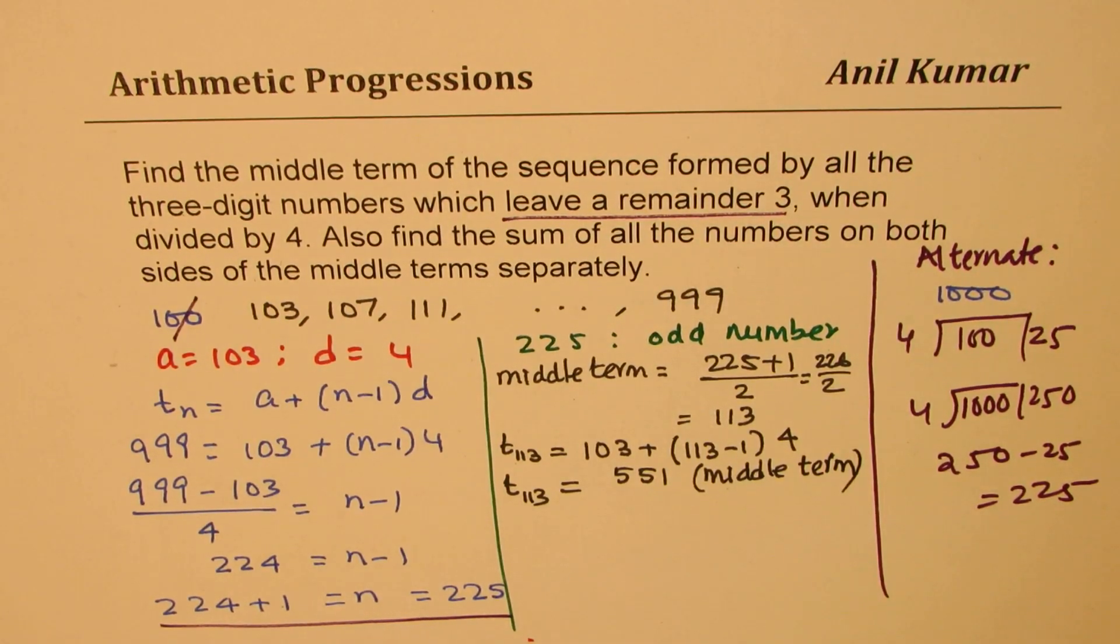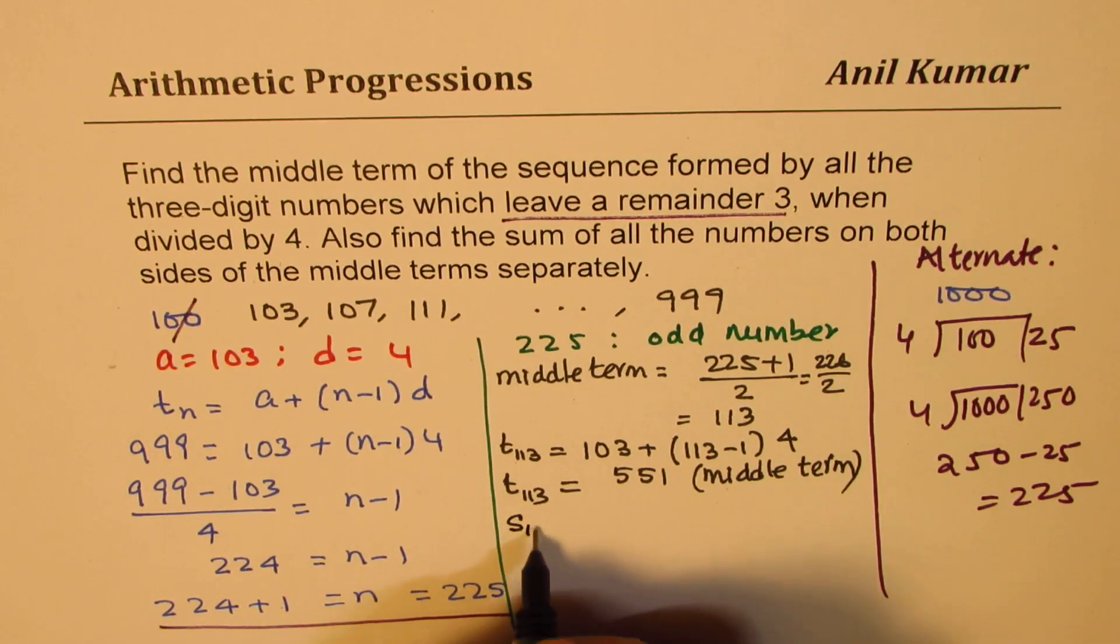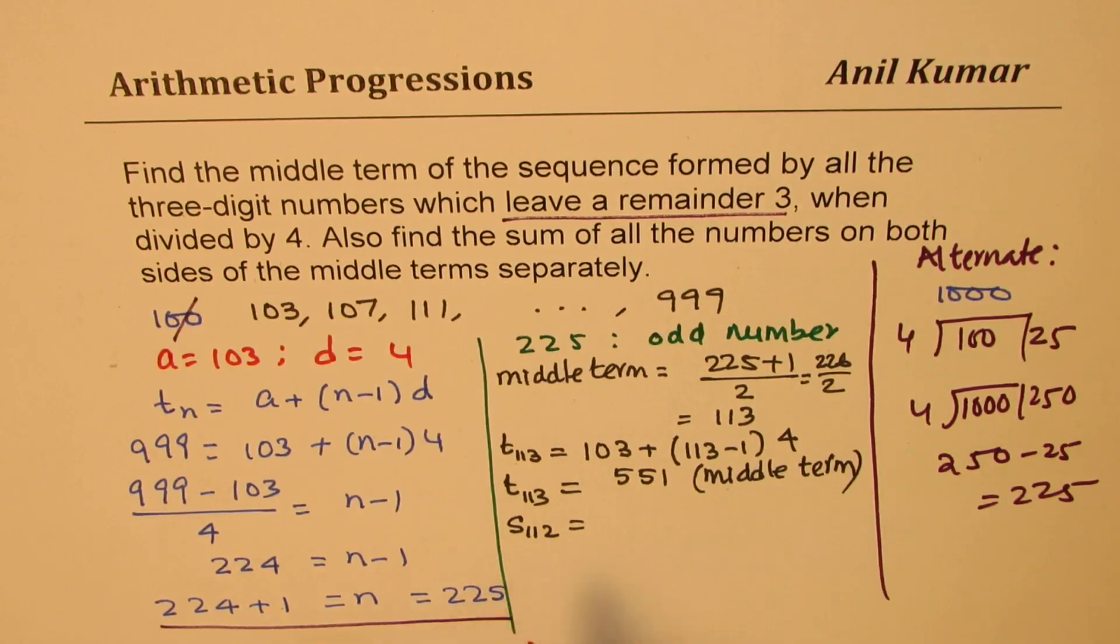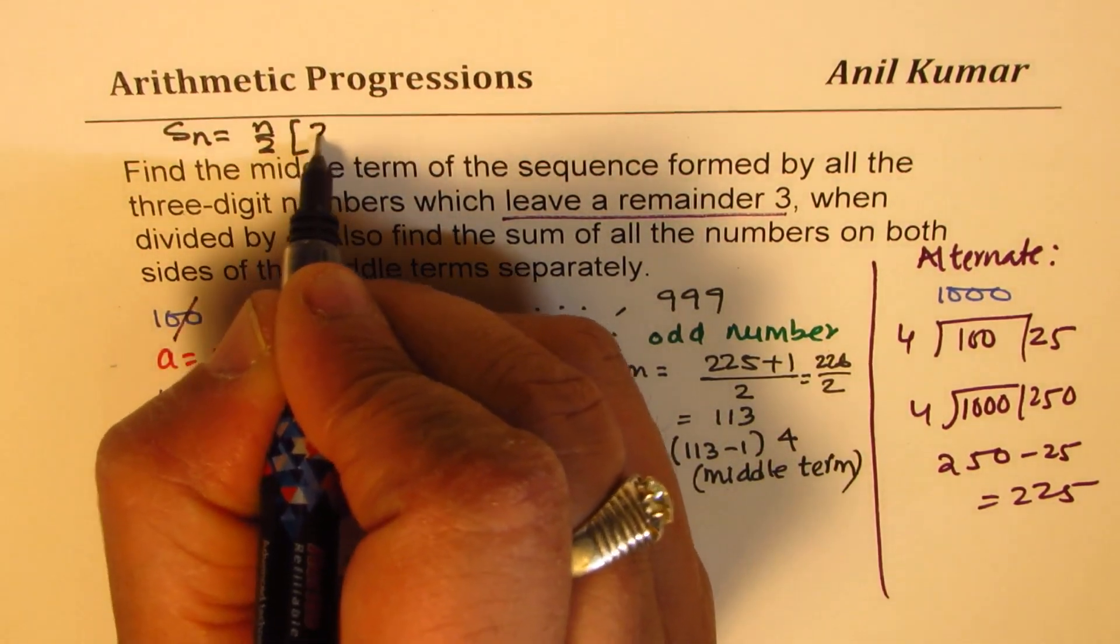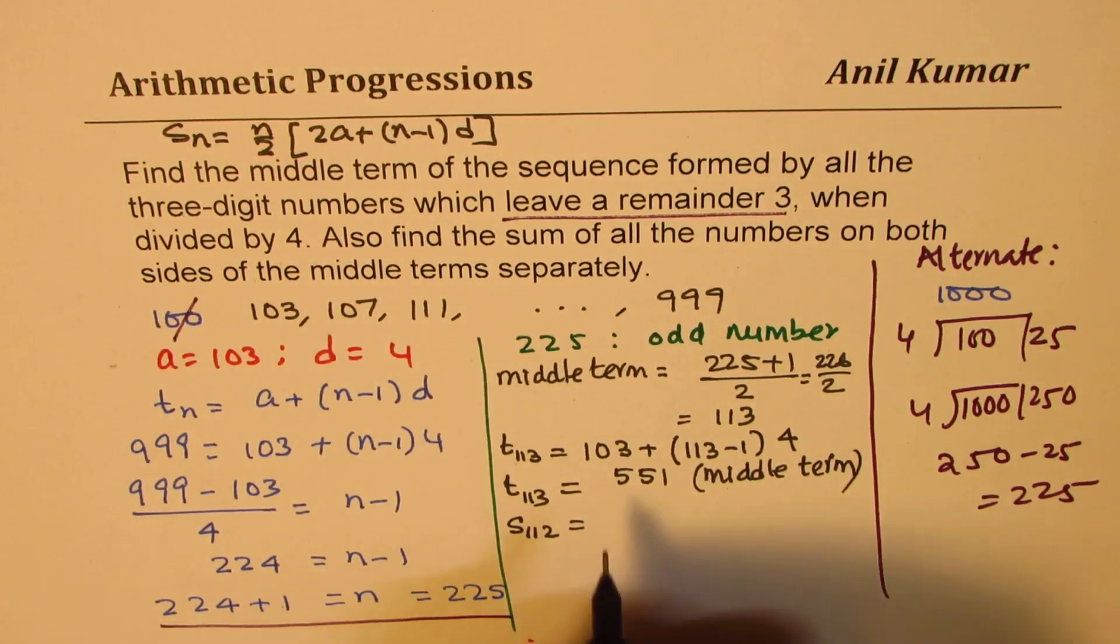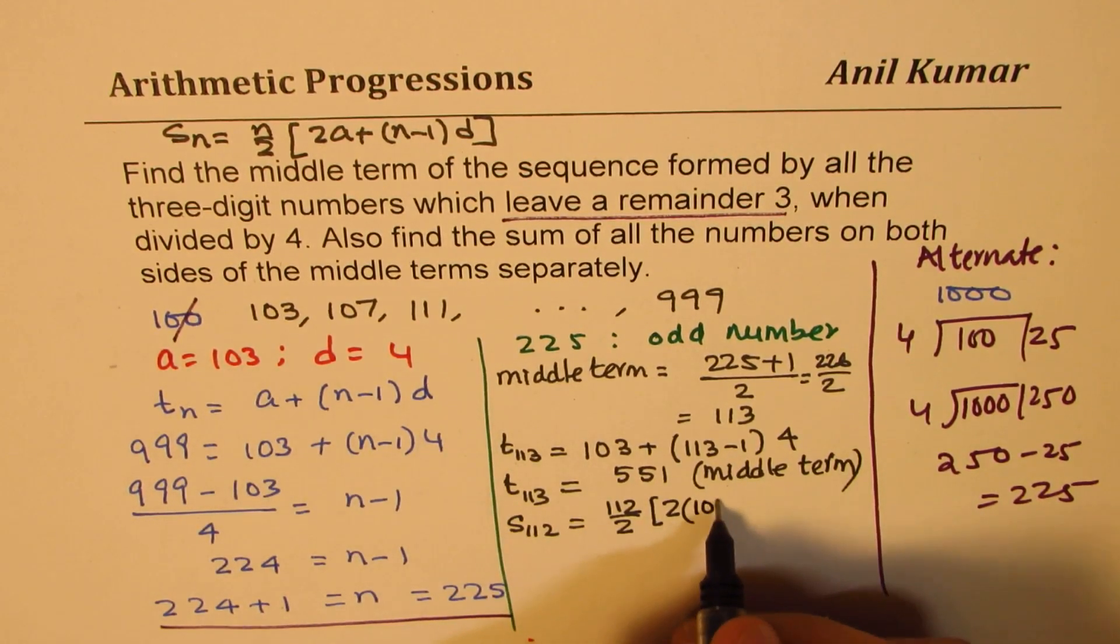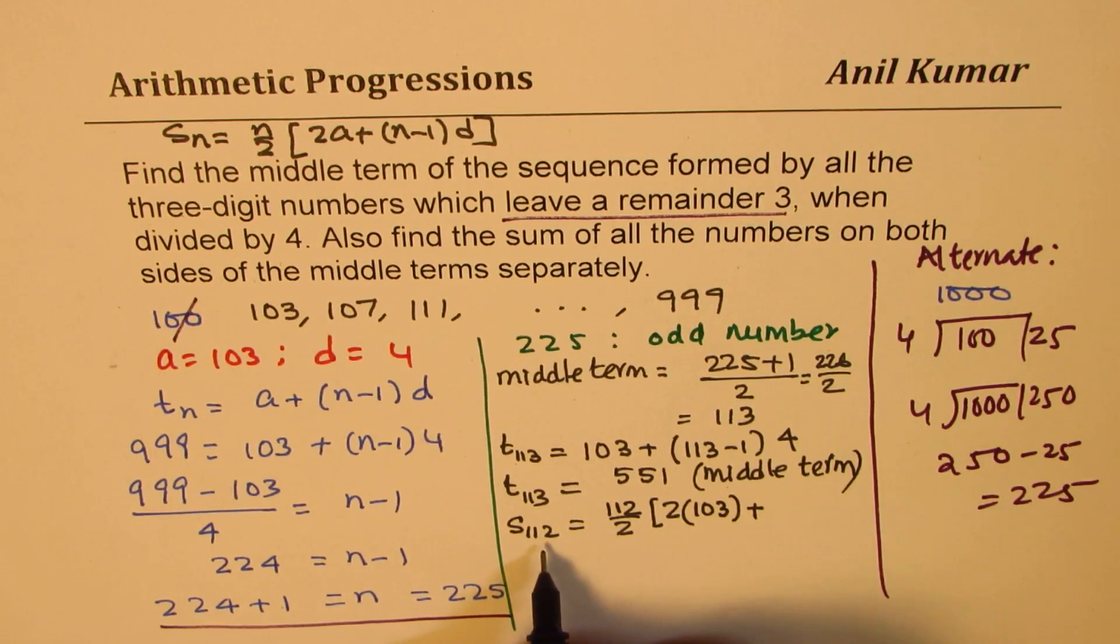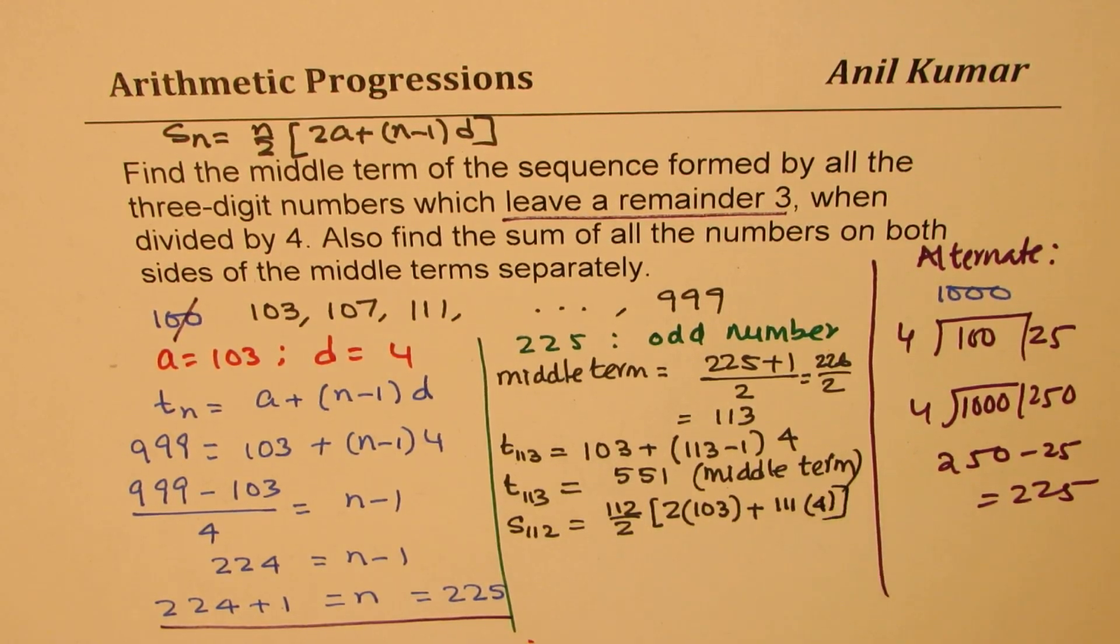Now, how do you find the sum of terms? That means we have to find sum of all the terms before it and after it. So we have to find what is sum of 112. So we can use the sum formula which is Sn equals to n over 2 times 2A plus n minus 1 times d. So 112 divided by 2, 2 times first term is 103, plus n minus 1, we want 112 as n, so it would be 111 times d which is 4 for us. So we can calculate this answer.